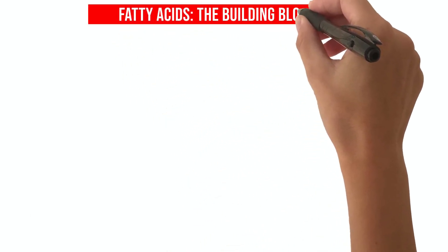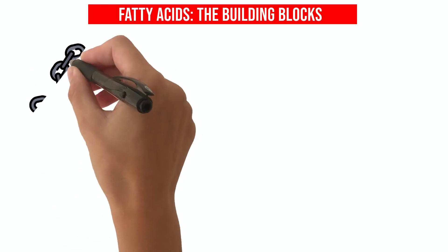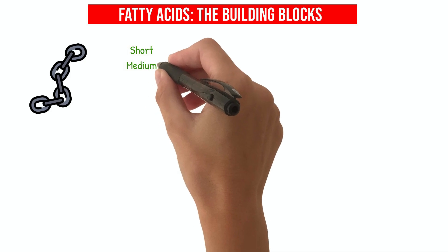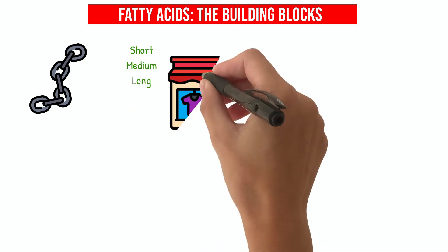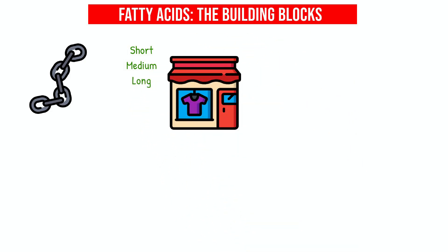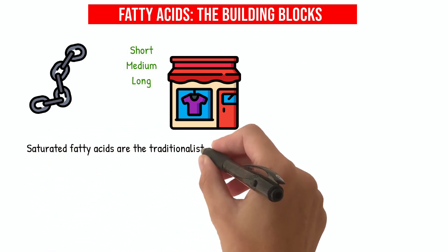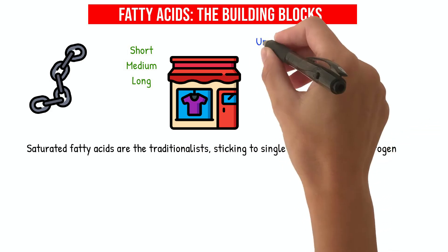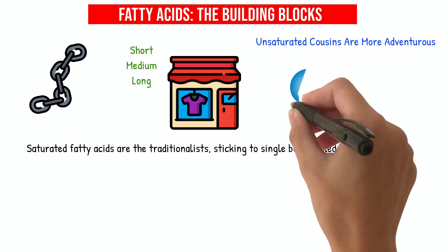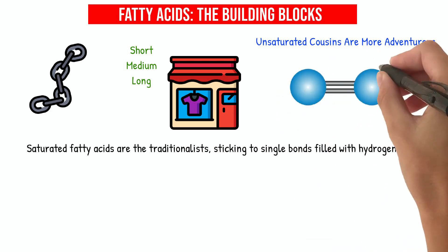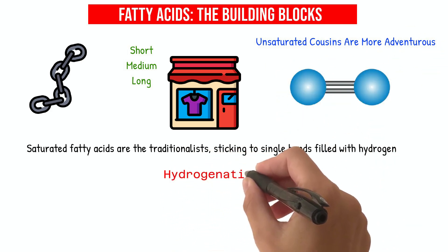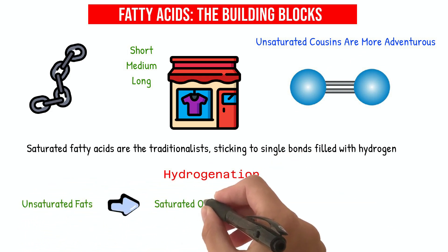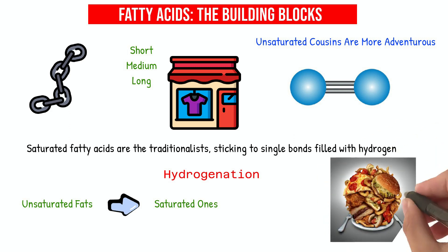Fatty acids, the building blocks, are fascinating little chains. They come in different lengths — short, medium, and long — much like the sizes in your favorite clothing store. Saturated fatty acids are the traditionalists, sticking to single bonds filled with hydrogen. Their unsaturated cousins are more adventurous, featuring one or more double bonds in their structure. Hydrogenation is like a molecular makeover, turning unsaturated fats into saturated ones, sometimes creating trans fats, the misfits in the fat family.